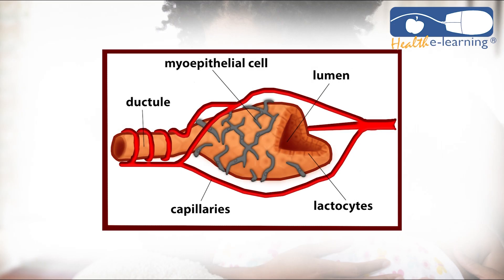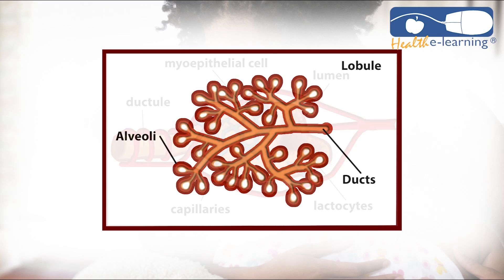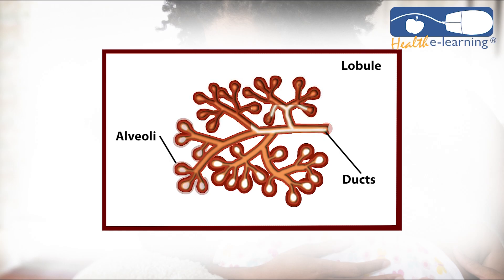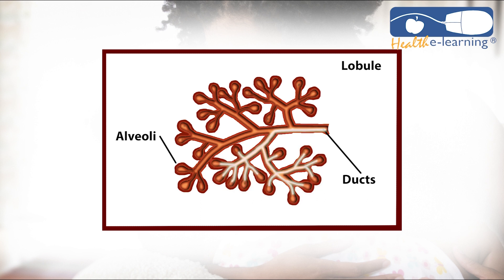Recall that oxytocin receptors are found on the myoepithelial cells. In response to oxytocin, the myoepithelial cells surrounding the alveoli contract, squeezing them and forcing milk into the ductal system and towards the nipple.